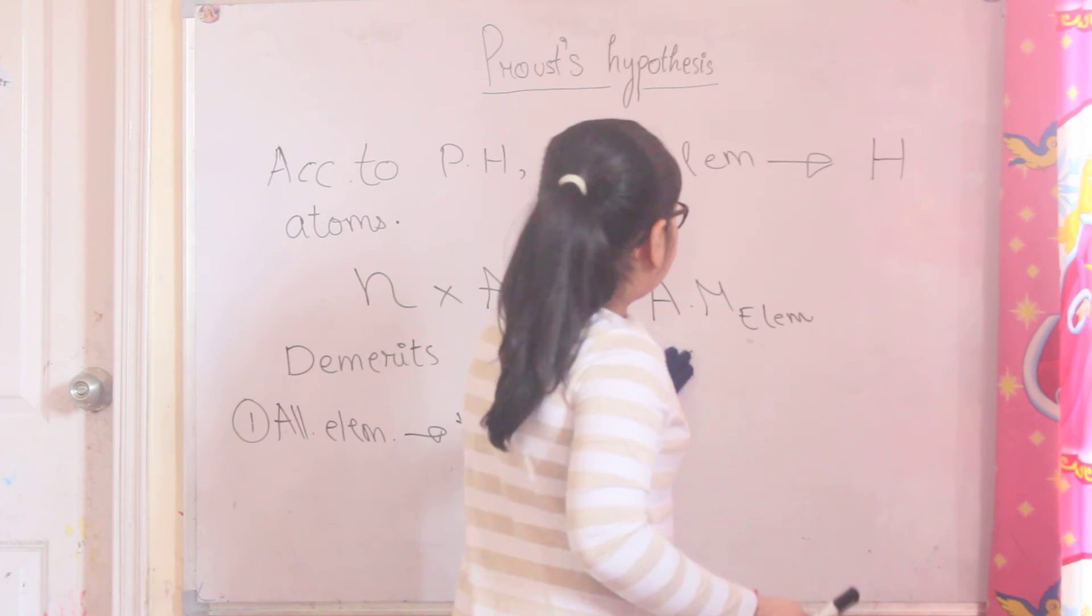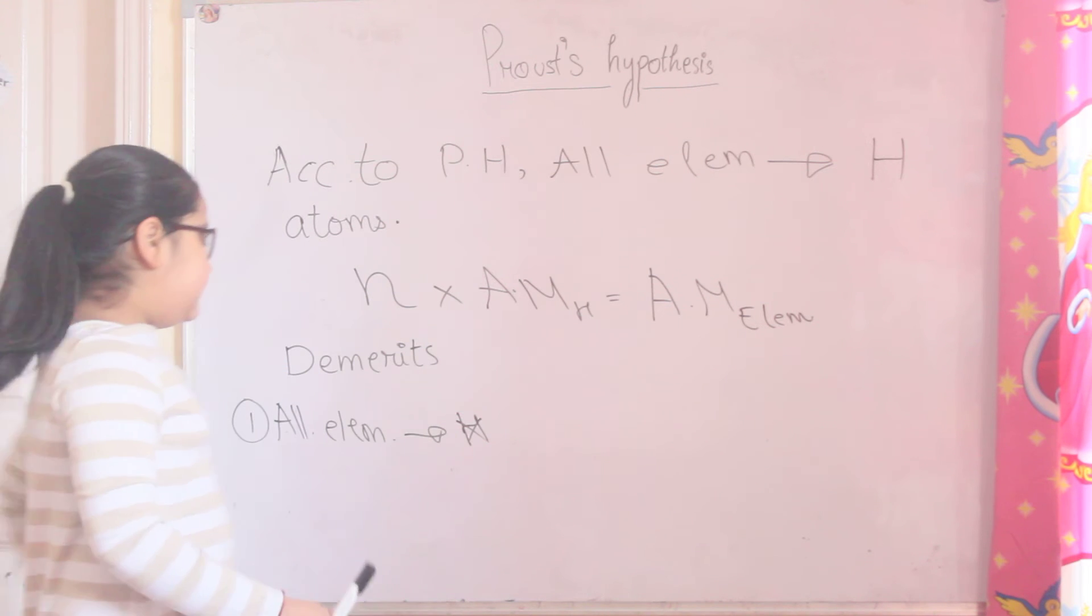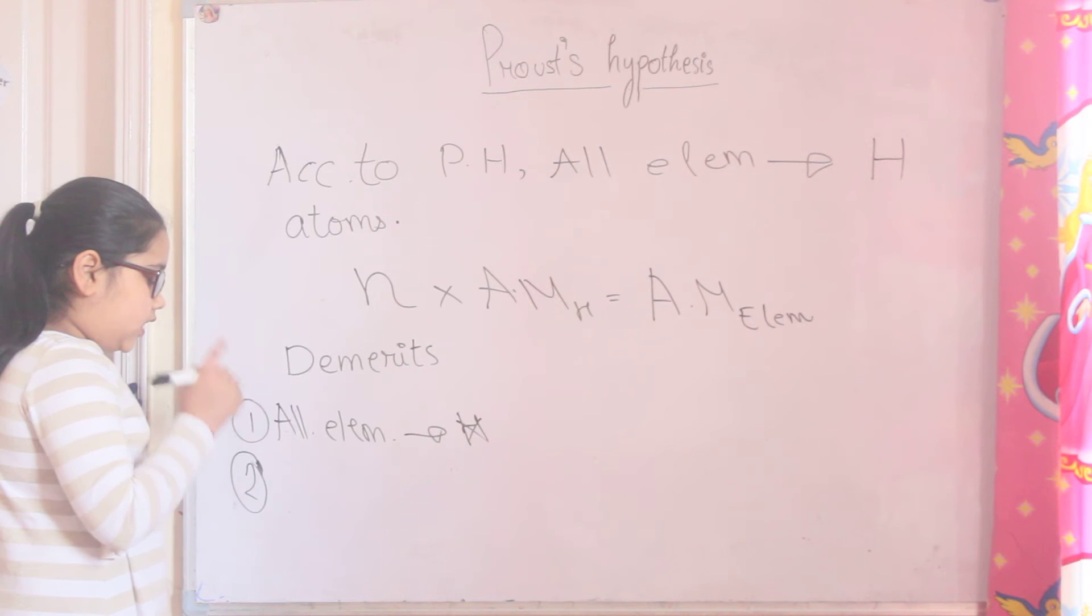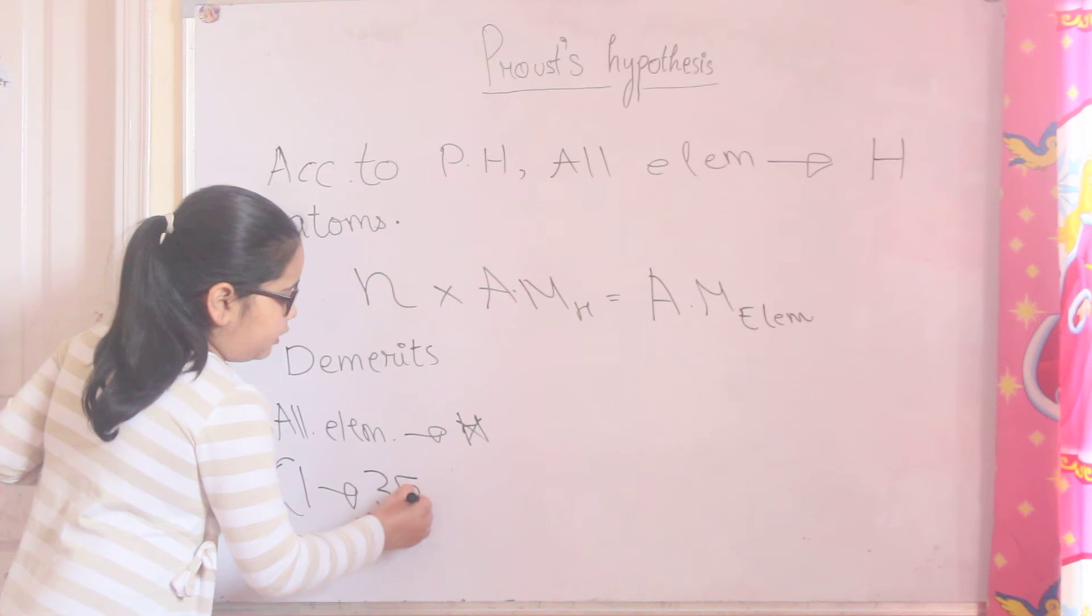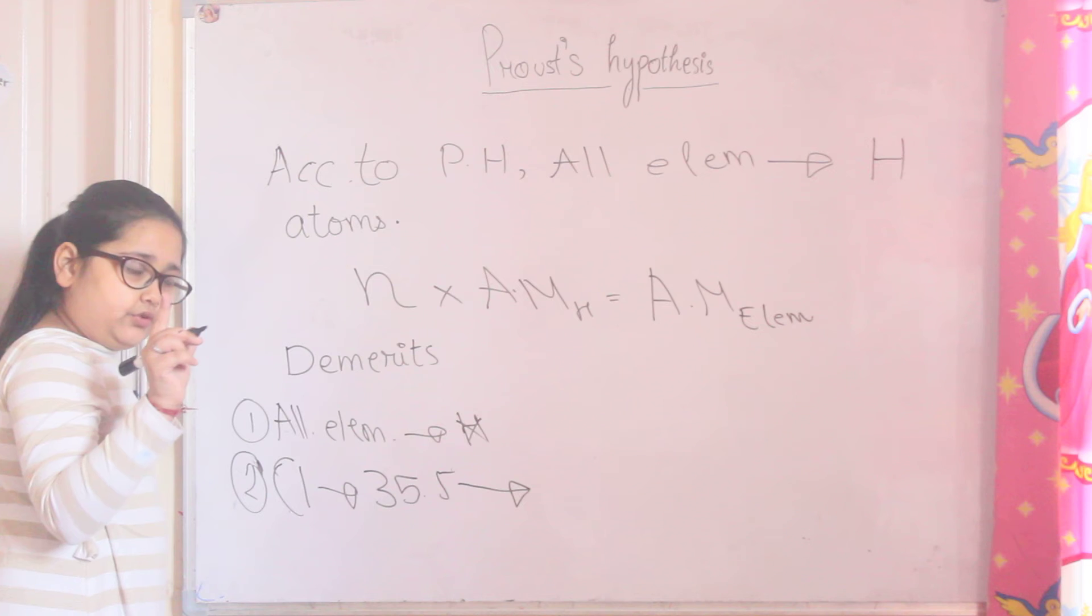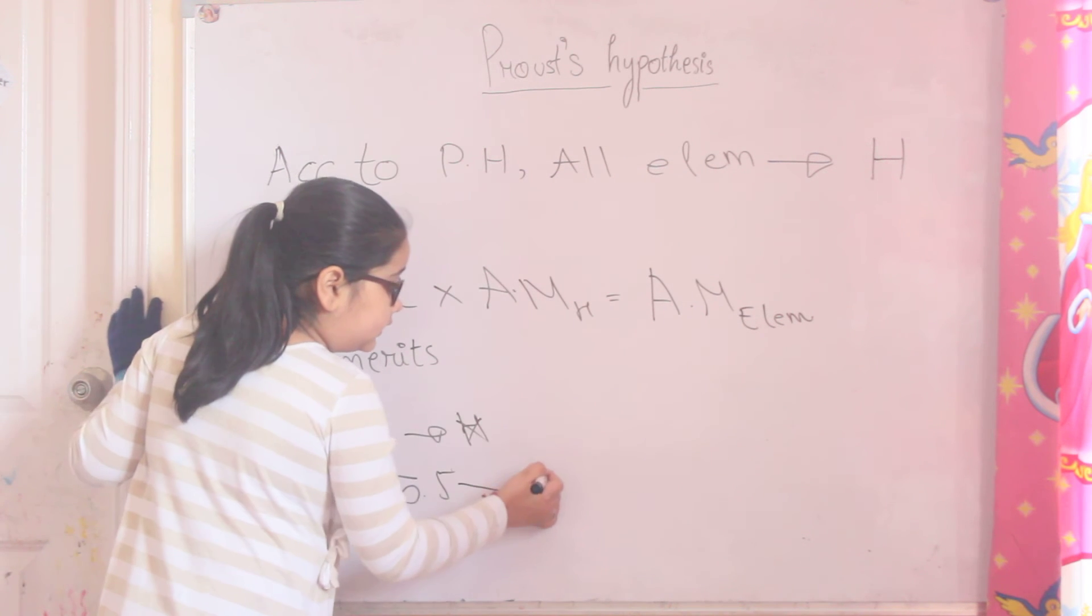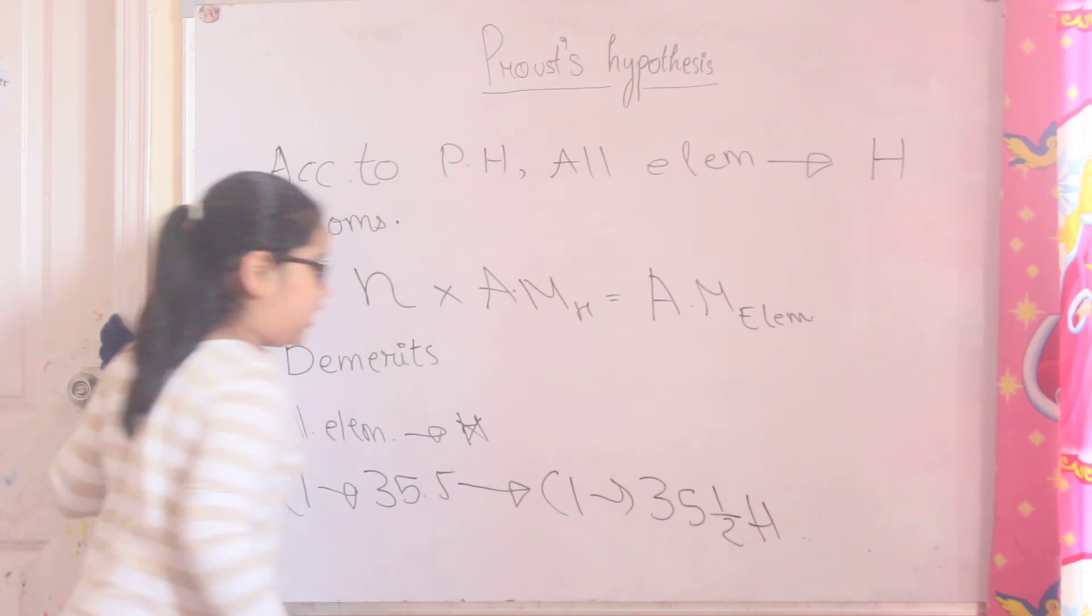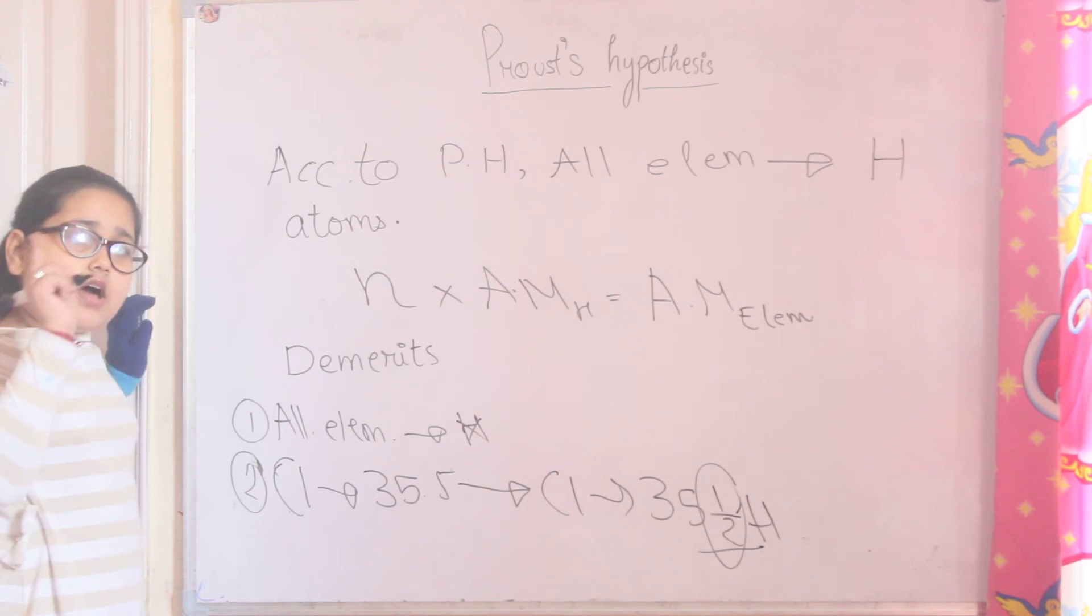Calcium is not made up of hydrogen. Now let's see, like chlorine. How much is the atomic mass? 35.5. So if Proust's hypothesis is true, then chlorine is made up of 35 and half hydrogen atoms. But what is 35 and half hydrogen? It's not a hydrogen atom. It's only one whole hydrogen atom.